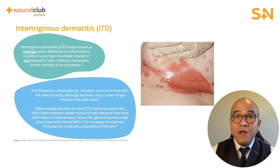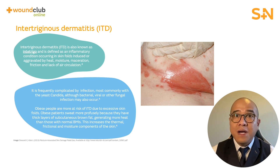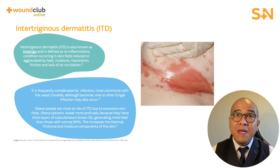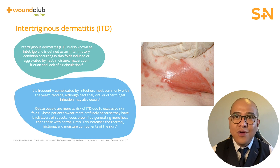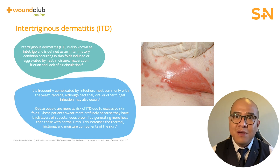This is frequently complicated by infection, most commonly with yeast — candida — although bacterial, viral, or other fungal infections may also occur. Obese people are more at risk of intertrigo due to excessive skin folds and increased perspiration needed to regulate their body temperature.